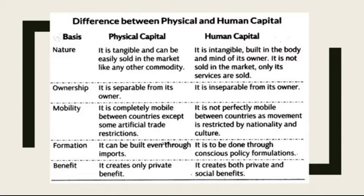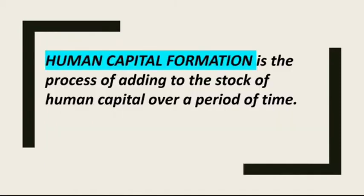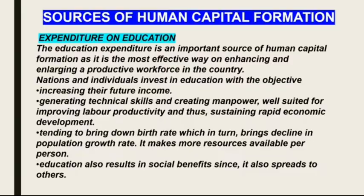The next basis of differentiation is formation. Physical capital can be built even through imports, whereas human capital formation is done through conscious policy formulation. The last basis is benefits: physical capital creates only private benefit, whereas human capital creates both private and social benefit. Human capital formation is a process of adding to the stock of human capital over a period of time.